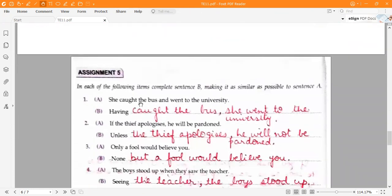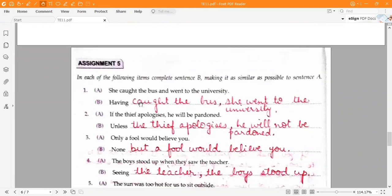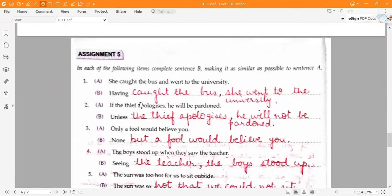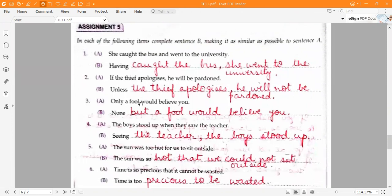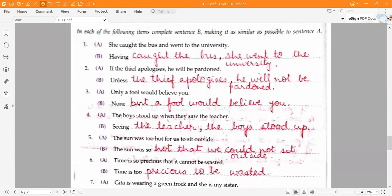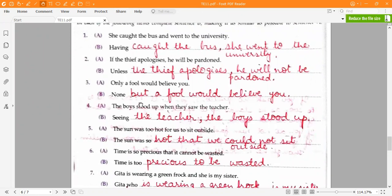Assignment five. In each of the following items, complete sentence B, making it as similar as possible to sentence A. The first one, she caught the bus and went to the university. Having caught the bus, she went to the university.